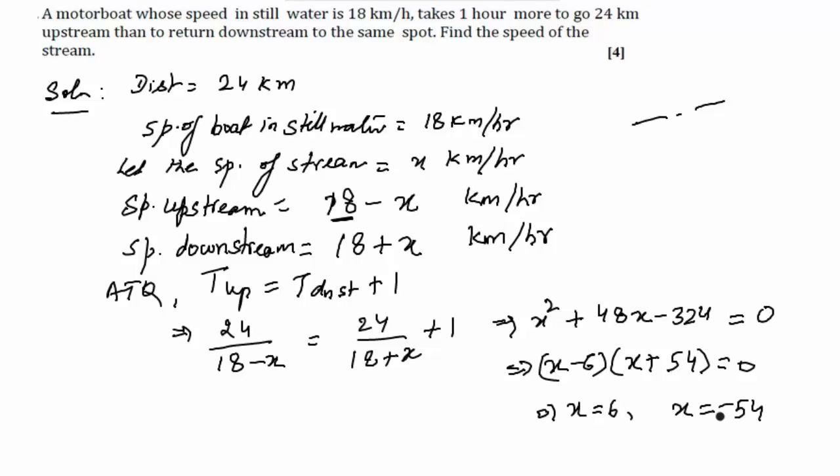Since the speed cannot be negative, this is ruled out. Therefore, the speed of the stream is equal to 6 km/h. This is the speed of the stream.